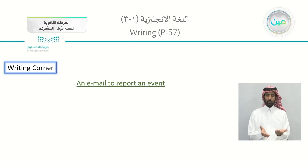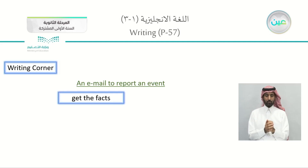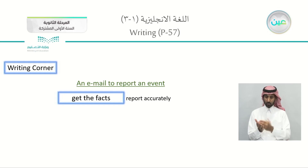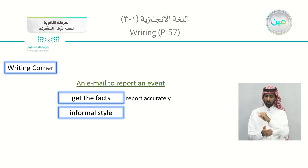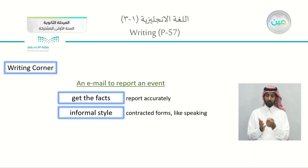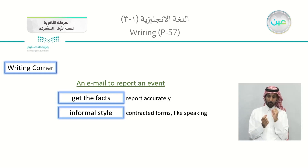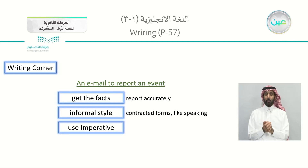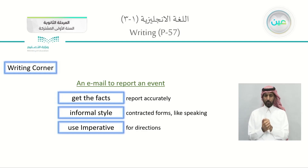When we're writing an email to report an event, we are also giving directions. You will get to the facts, so you have to report accurately — write exactly what happened. Also, you will use informal style because usually we are writing to family and friends. You can use contracted forms — 'I'm' instead of 'I am' — as if you were speaking. Use the imperative when you are giving directions: take the second right, head southwest.